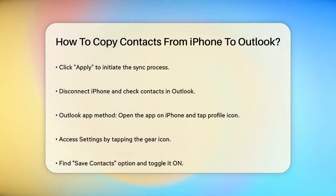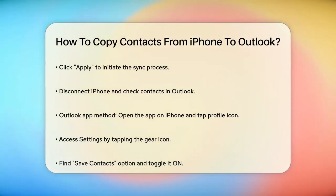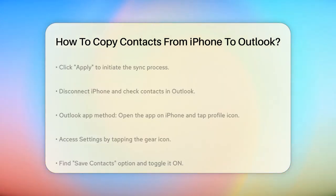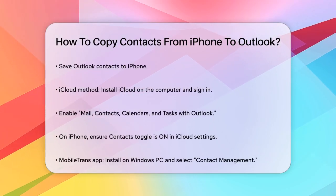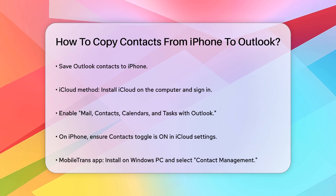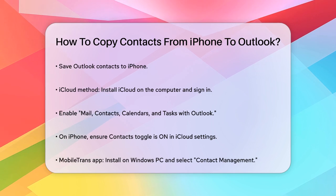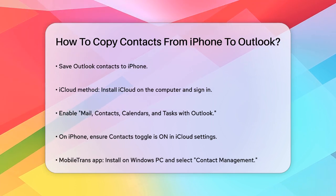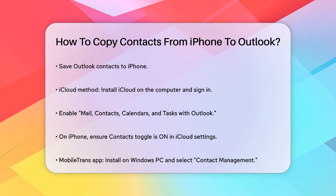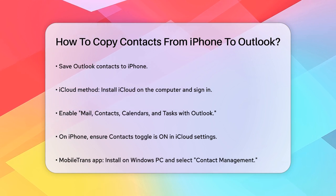Your Outlook contacts will now be accessible from the Contacts app on your iPhone. If you prefer not to use iTunes or the Outlook app, you can also use iCloud to sync your contacts. First, ensure iCloud is set up on your computer by installing the iCloud application and signing in with your Apple ID. Check the box for Mail, Contacts, Calendars, and Tasks with Outlook, and click Apply.